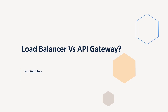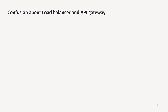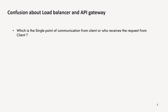There is a lot of confusion among architects and developers about load balancer and API gateway — specifically, which is the first component that receives the request from the client. Suppose you have a client such as a mobile app, internet, or browser, and in your architecture you have microservices along with a load balancer and API gateway — then what is the single point of communication for the client, and who receives the request first?